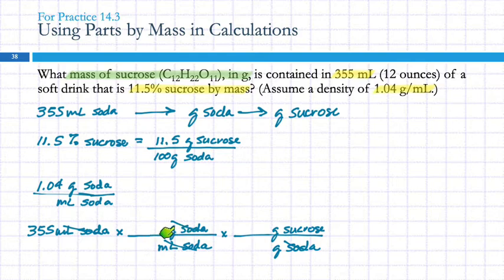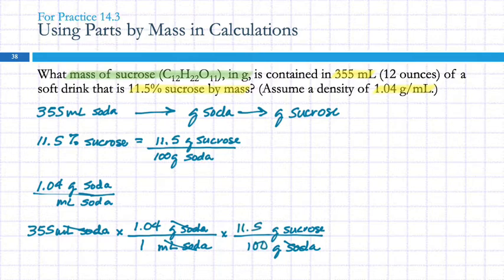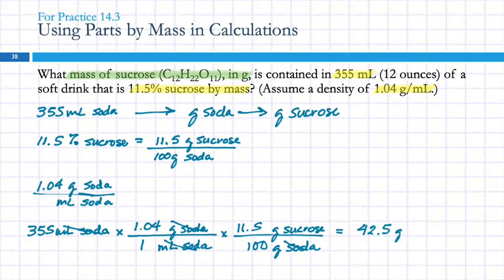Here I have the relationship between grams of soda and milliliters of soda — 1.04 grams of soda per 1 milliliter. And grams of sucrose to grams of soda: it was 11.5 grams of sucrose per 100 grams of soda. So: 355 times 1.04 times 11.5 divided by 100. With three significant figures, that gives us 42.5 grams of sucrose.